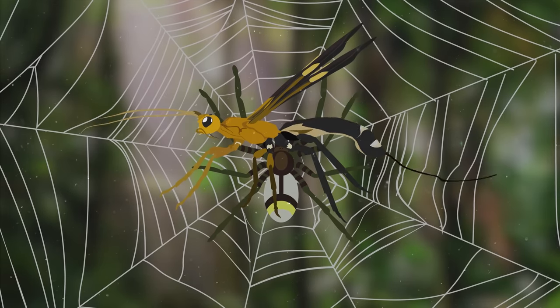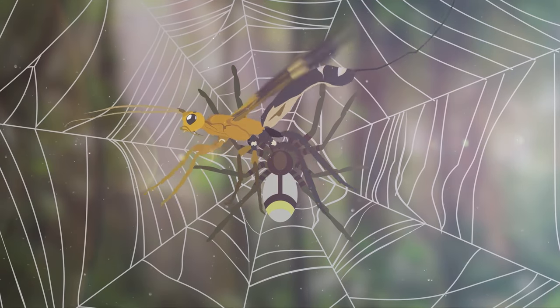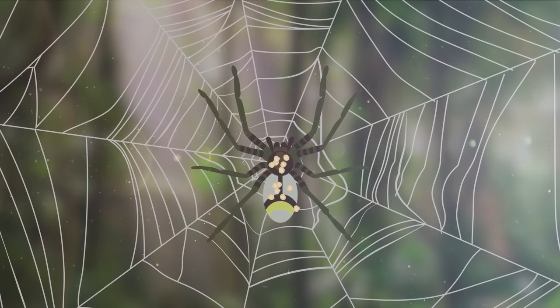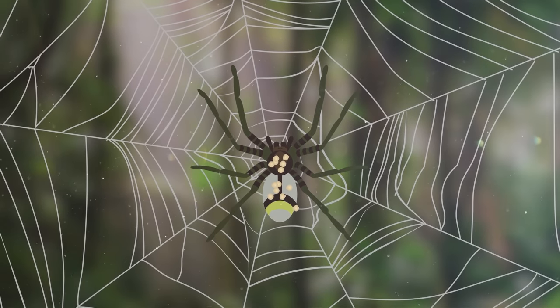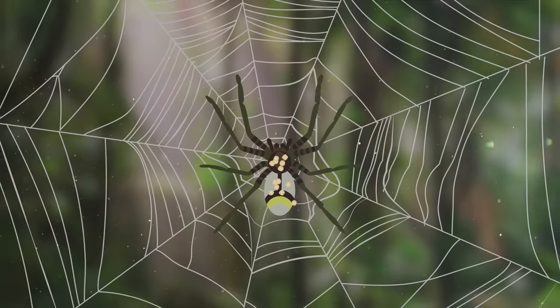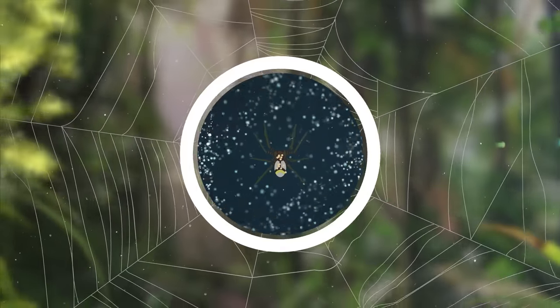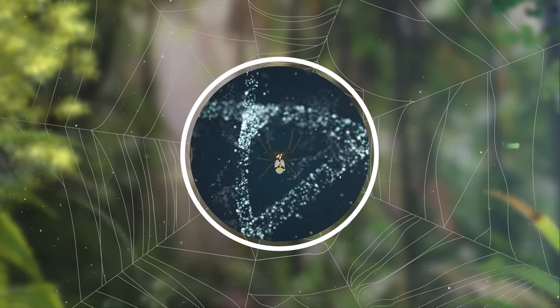The wasp starts by paralyzing the spider with a single sting before laying her larvae on the surface of its body. Along with the unwanted babysitting gig, the spider receives another sinister surprise: brand new biological coding.